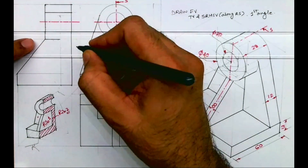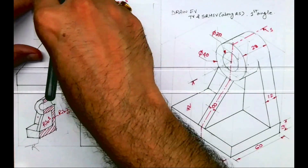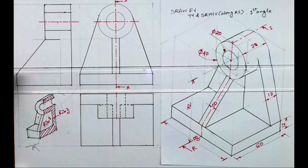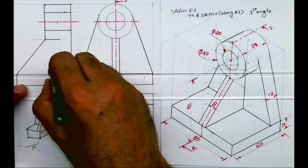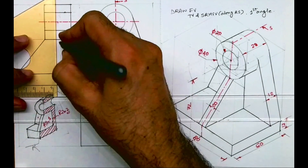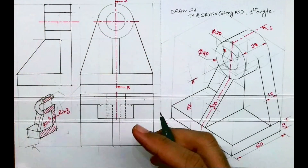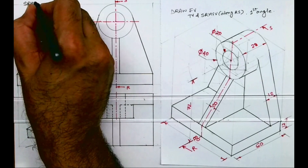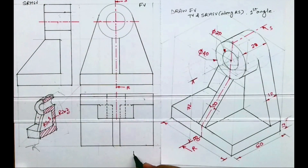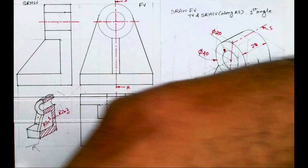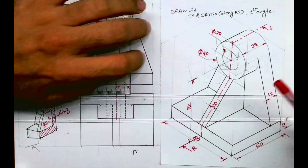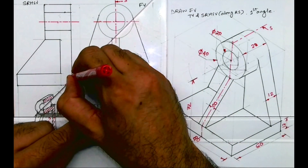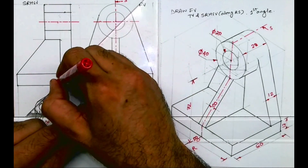That you can keep in mind. This dotted line will become dark, this line will be dark, this will be dark. Now this is the sectional right-hand side view, this is the front view, and this is the top view. I need to draw hatching in the side view. I hope everyone understood how to draw this sectional right-hand side view. Thank you.